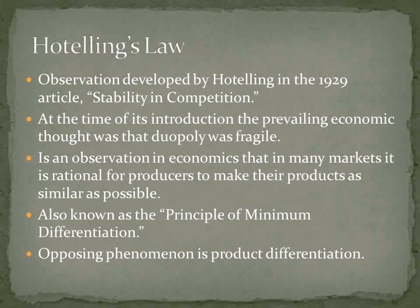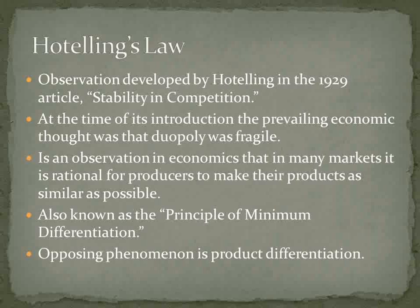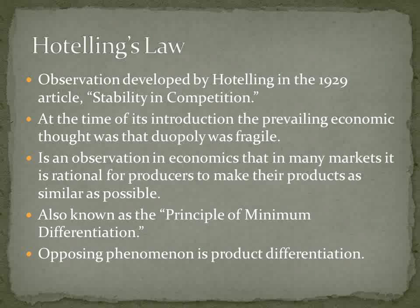Hotelling's Law is an observation in economics that in many markets it is rational for producers to make their products as similar as possible. This is also referred to as the principle of minimum differentiation, as well as Hotelling's linear city model. The observation was made by Harold Hotelling in the article 'Stability and Competition' in the Economic Journal in 1929.